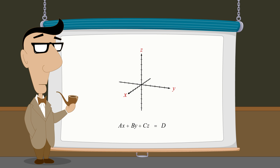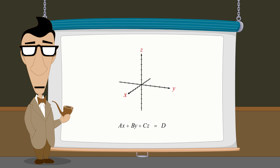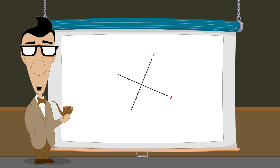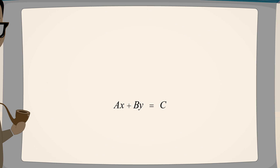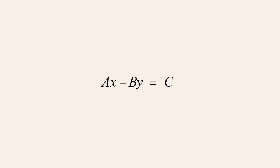So what does the graph of a linear equation in three variables look like? Let's start by looking at some simple examples in two variables and then extend the examples to three variables. When a linear equation is written in standard form, setting the coefficient of any variable to zero causes the term containing that variable to disappear.